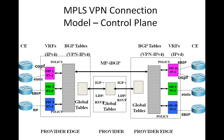If you want to exchange this VPN-specific information from one provider edge router to another provider edge router, you use multi-protocol IBGP. For that, you add the route distinguisher to each of the routes in the VRFs, and you form this big VPN IPv4 table. This is the big routing table that gets exchanged across the edge routers.